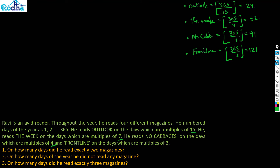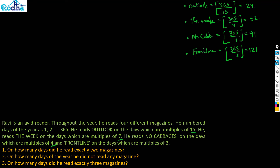Observe that since 3 divides 15, all multiples of 15 are also multiples of 3. So in the Venn diagram, the Outlook circle will be completely inside the Frontline circle. This is an important structural insight that simplifies the diagram significantly.